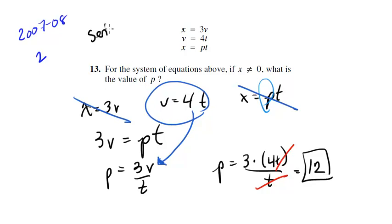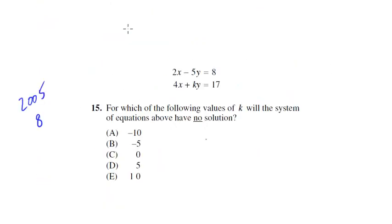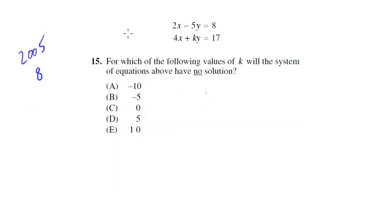So here we're doing a series of substitutions — we talked about substitutions in a previous video, and here they are again in a more difficult form for a multiple equations, multiple unknowns problem. Let's look at this one from 2005 section 8, number 15. This one is a hard question. For which of the following values of k will the system of equations have no solution? Wow, this is a tough one.